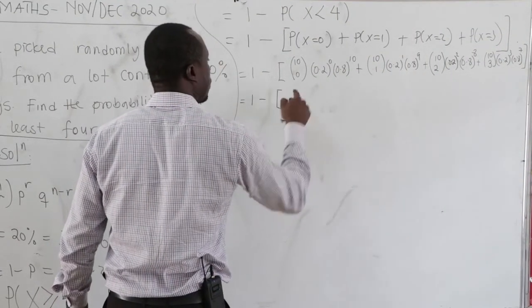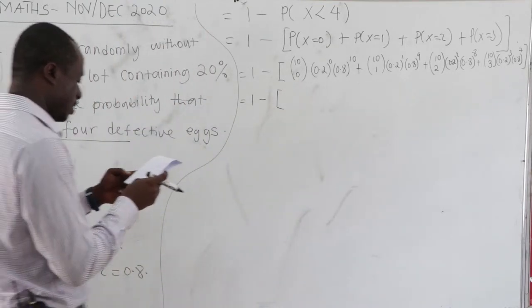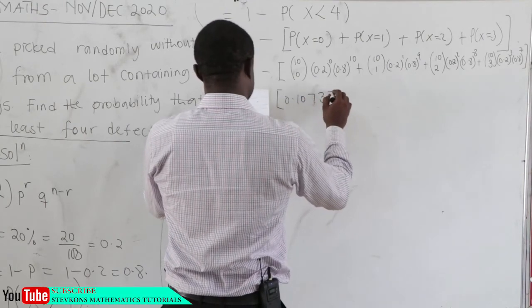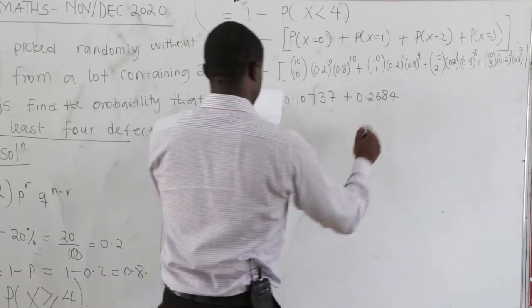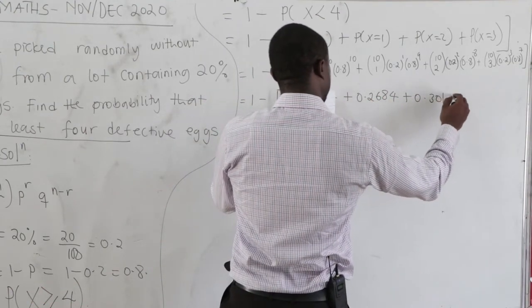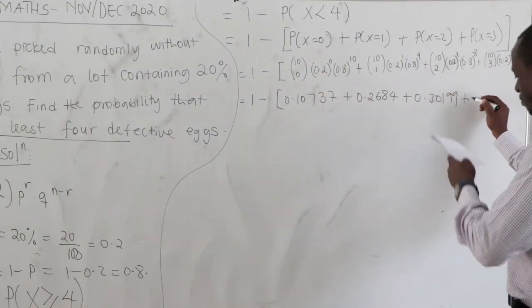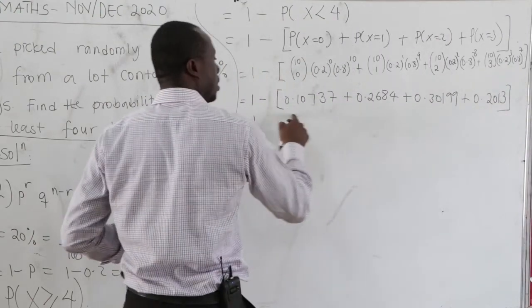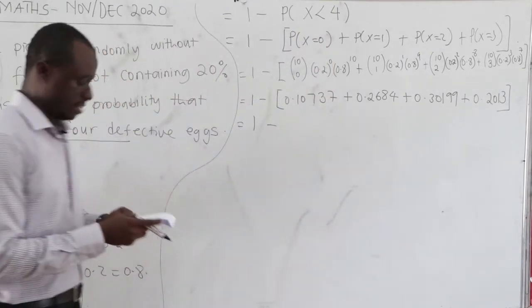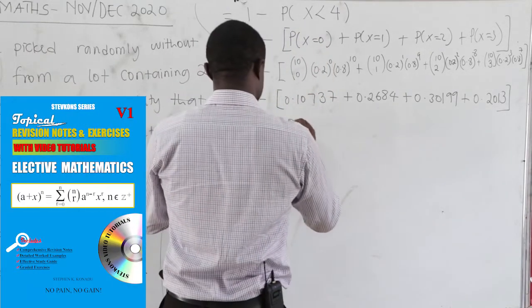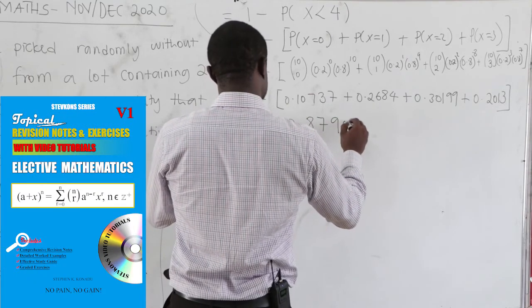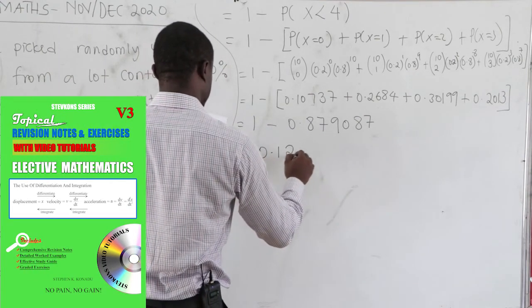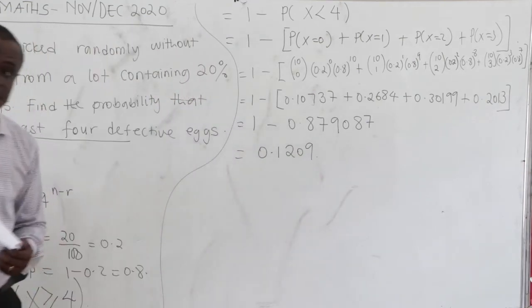So we have 1 minus. Now, when we work out this, the first one on the calculator gives us 0.10737 + 0.2684 + 0.30197 + 0.2013. Now when you add everything here, this gives us 0.879087. And 1 minus this is giving us 0.1209. So this is our answer. Very, very easy.